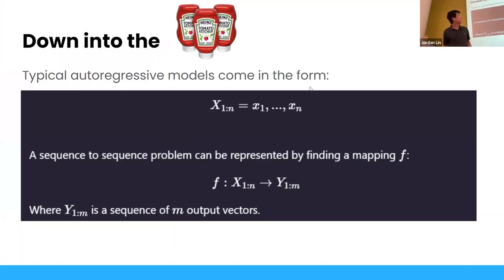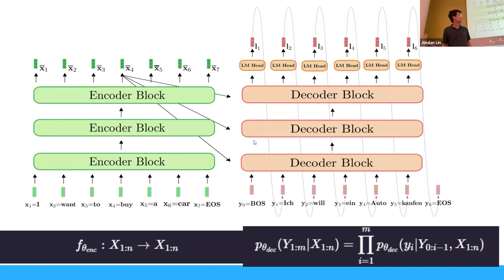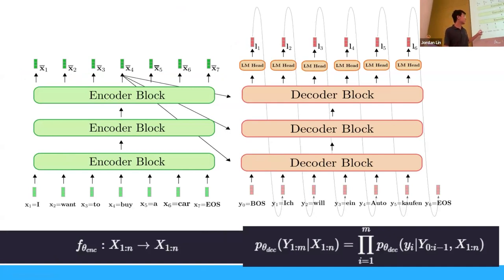Typical autoregressive models take some input sequence x₁ to xₙ as individual embedding vectors. A sequence-to-sequence problem can be represented by finding a map from an input sequence to an output sequence. This structure usually has an encoder and a decoder when input and output lengths differ. For large language models, we use autoregressive decoder-only models without an encoder.